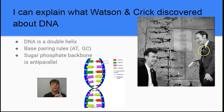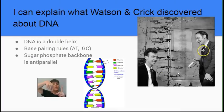On one side of the DNA molecule, the strand is running pointing up. On the other strand, it points down. This is the meaning of anti-parallel — it's parallel, but the strands point in opposite directions.